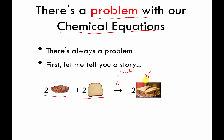And what does she say to me? Well, she says, 'You're an idiot, because you didn't get enough bread.' How many slices of bread do we need? Well, each sandwich needs two slices. And if I'm making two sandwiches, I need four slices, and you only got two.